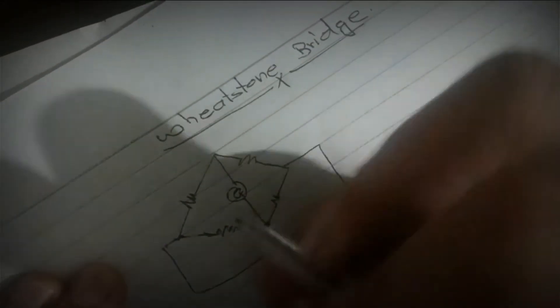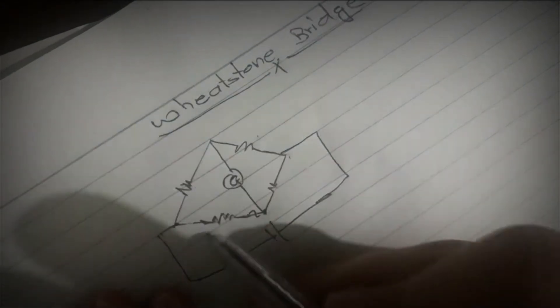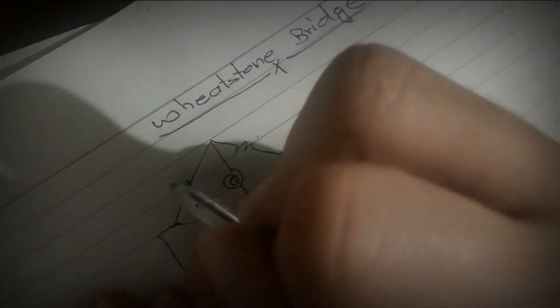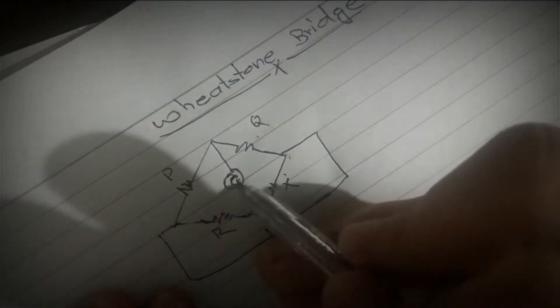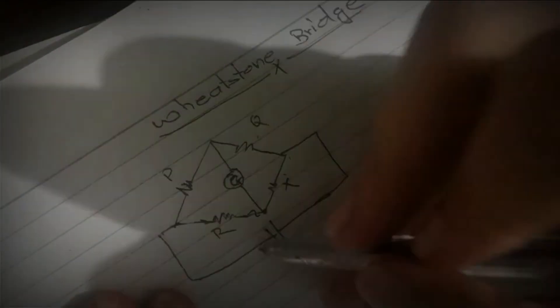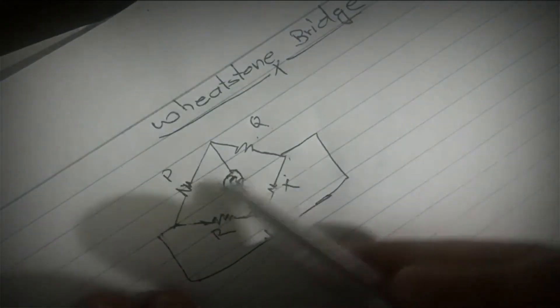It is a 4-resistance structure: P, Q, R, X. It is another structure. The Wheatstone Bridge principle is a structure. In this case, the formula is P by Q equals X by R.